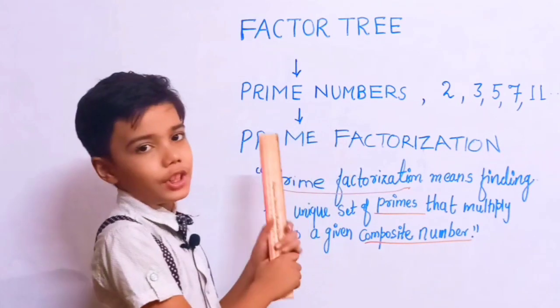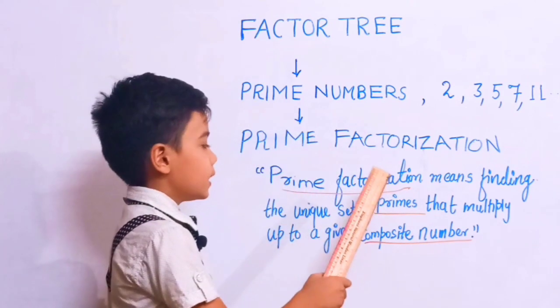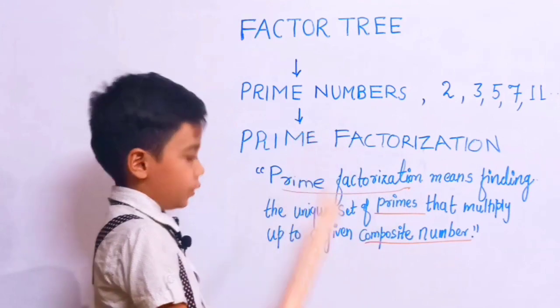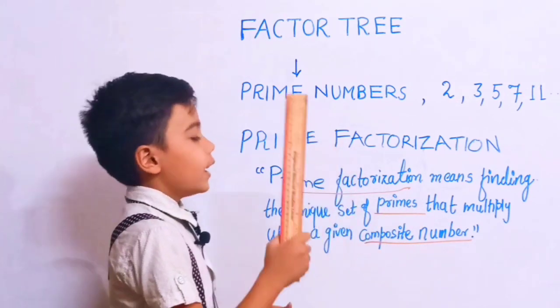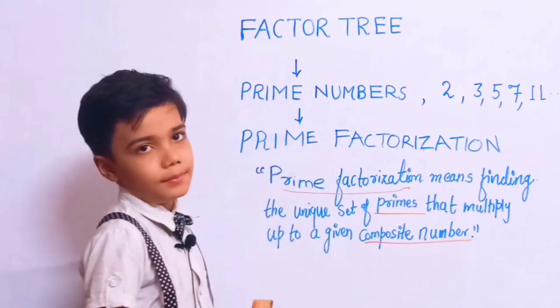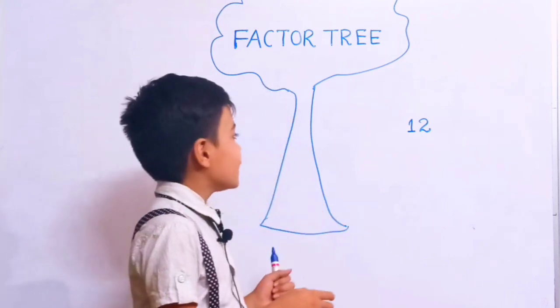Prime factorization means finding the unique set of primes that multiply up to a given composite number. Let's know about factor tree.